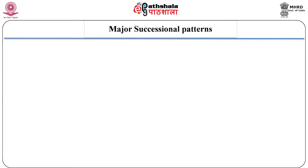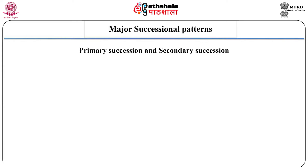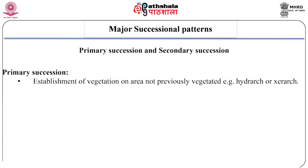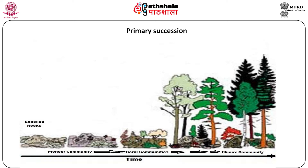Major types of succession or major successional patterns. First is primary succession and secondary succession. Primary succession refers to the establishment of vegetation on an area not previously vegetated. It may be hydrarch primary succession if the primary community becomes established on a wet surface such as a pond or a lake, or xerarch primary succession if the primary community becomes established on a dry substrate, for example sand dunes or rocks. This slide shows a diagrammatic representation of primary succession — from exposed rocks as the bare area, to the pioneer community, then serial community, and finally a forest as the climax community.